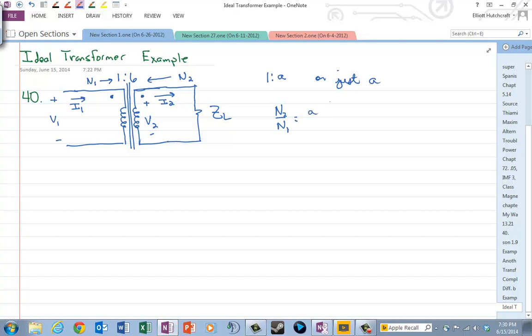N2 over N1 is A, now that's the same always. Zn is ZL over A squared. Now that's an equation that comes from basically looking at the input impedance for a particular load impedance attached to the secondary coil, and that doesn't actually vary with the plus or minus sign being at the dotted or undotted terminal either because it's just an impedance.